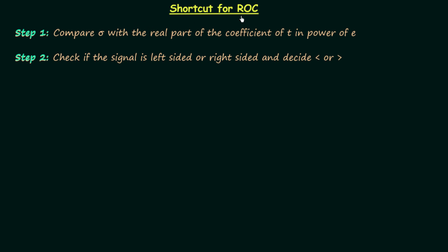We know the process to calculate the region of convergence using the condition for existence of Laplace transform, but there is one easy shortcut method to calculate the region of convergence. In this lecture we will understand the shortcut method, which has two steps. In step number one, we compare sigma, which is the real part of complex variable S, with the real part of the coefficient of t in the power of e.